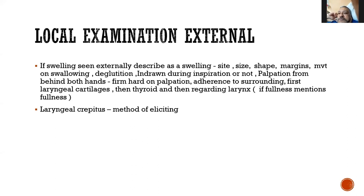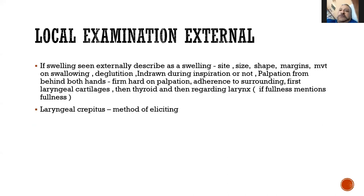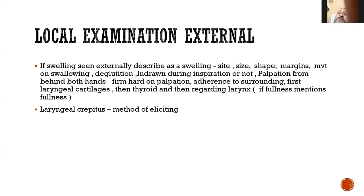Laryngeal crepitus is elicited by holding the larynx from the front and moving it horizontally over the spine — a grating sensation produced when the larynx moves laterally on the vertebral column. It is normally present but absent in post-cricoid malignancy and retropharyngeal lesions, where the larynx is pushed forward and no longer moves over the vertebral column. This completes the external local examination, including neck nodes, laryngeal cartilages, thyroid gland, larynx fullness, and laryngeal crepitus.